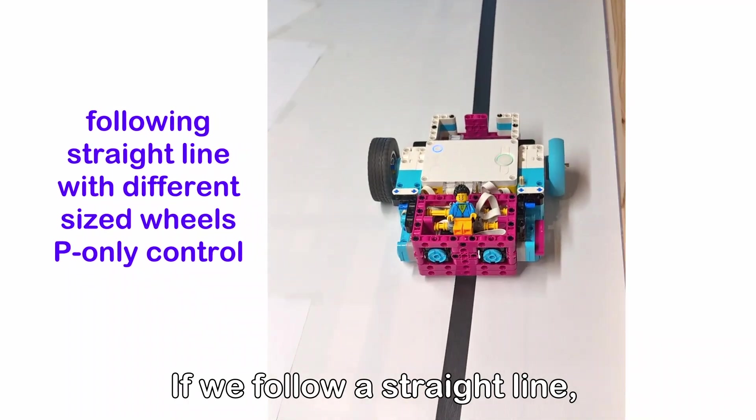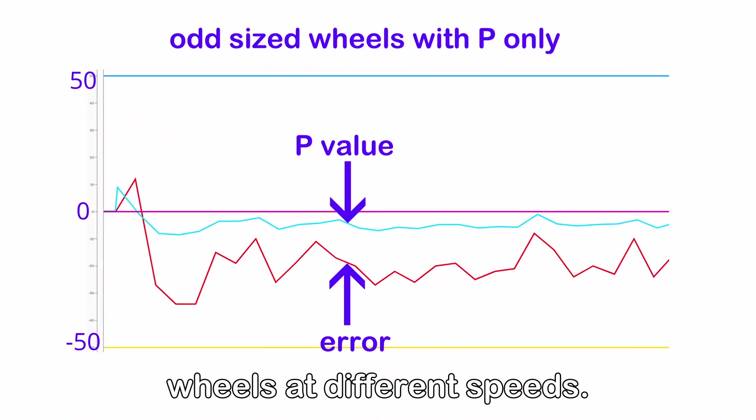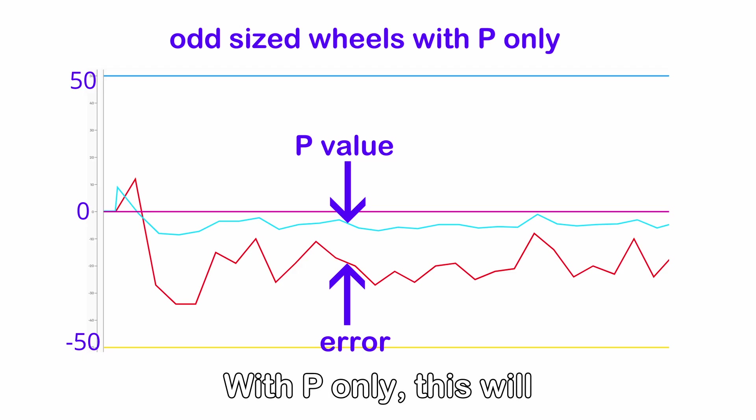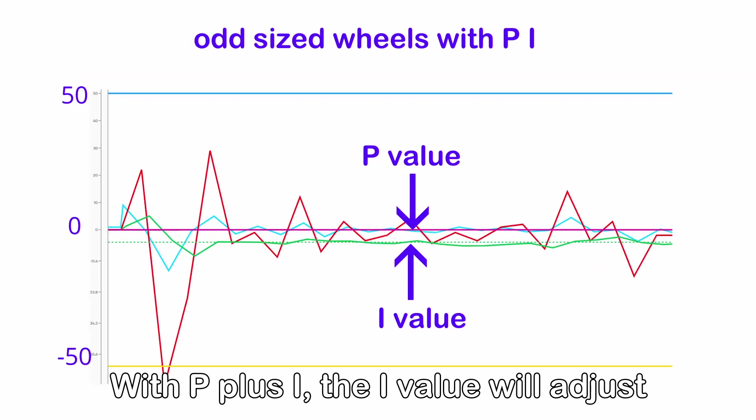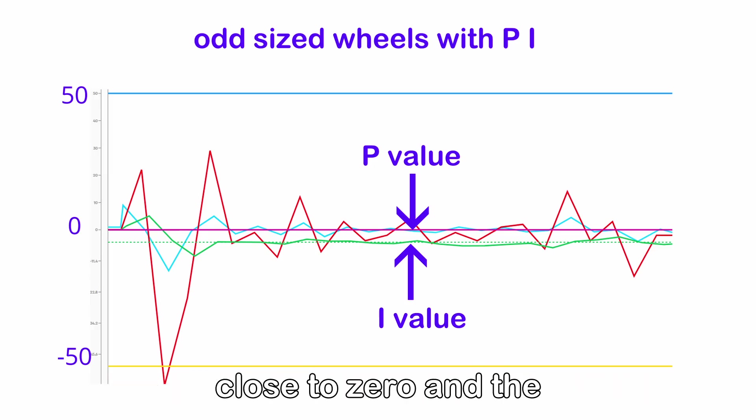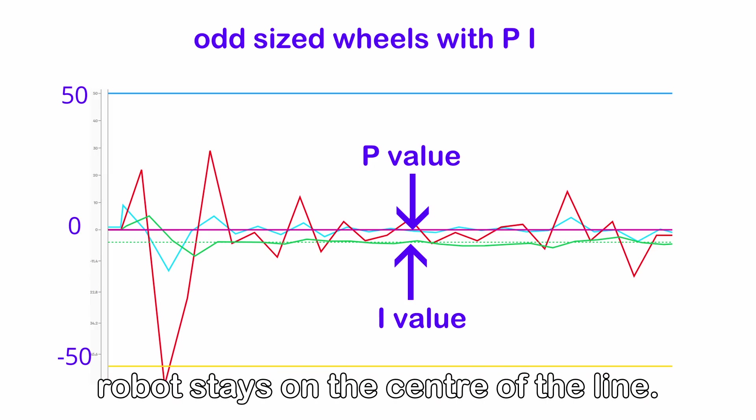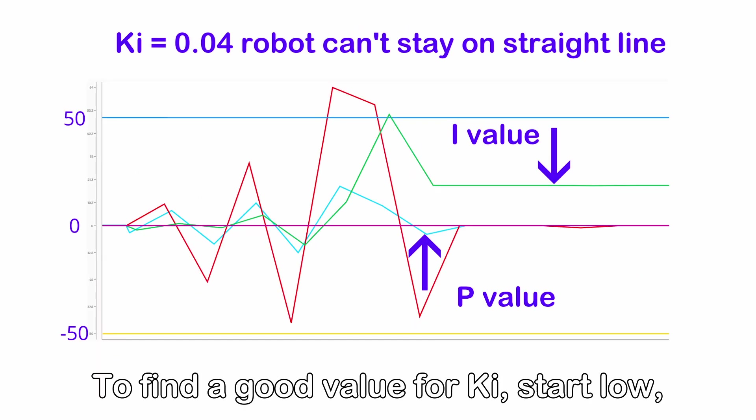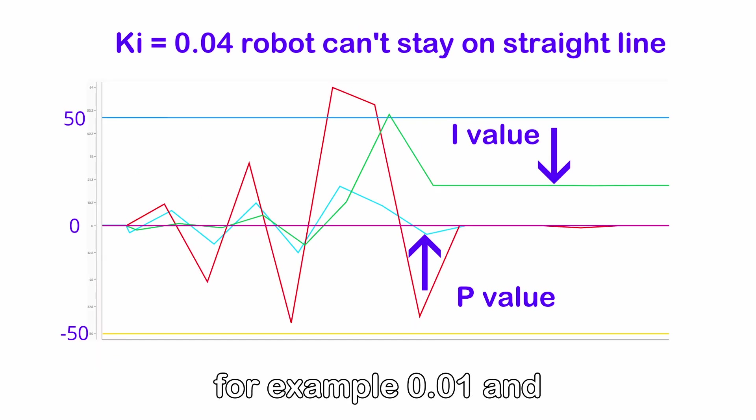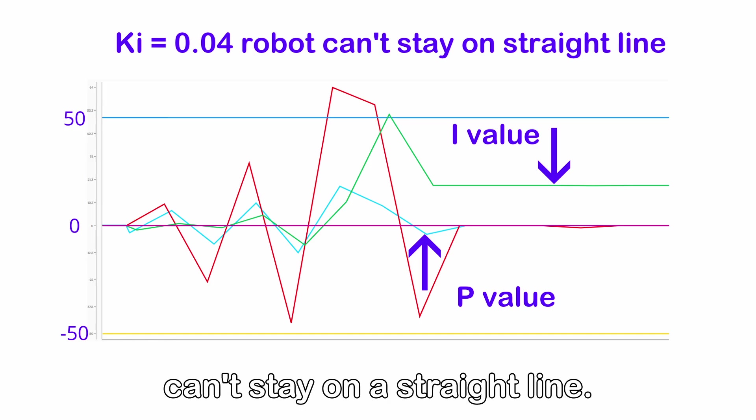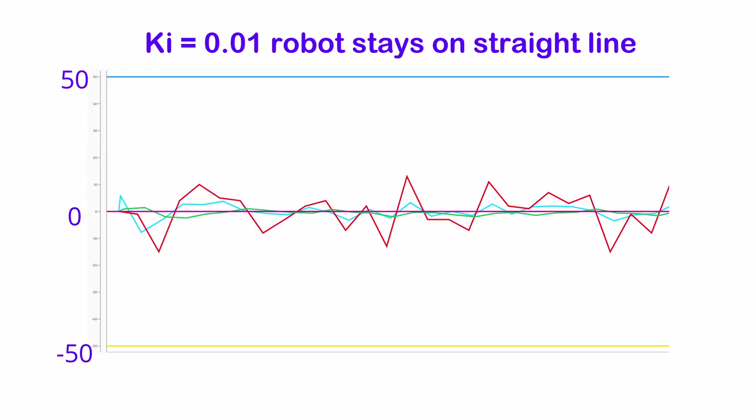If we follow a straight line, my block will have to move the wheels at different speeds. With P only, this will give a permanent error. With P plus I, the I value will adjust so that the error remains close to 0 and the robot stays on the center of the line. To find a good value for KI, start low, for example 0.01, and increase KI until the robot can't stay on a straight line. Use one quarter to one half of this value.